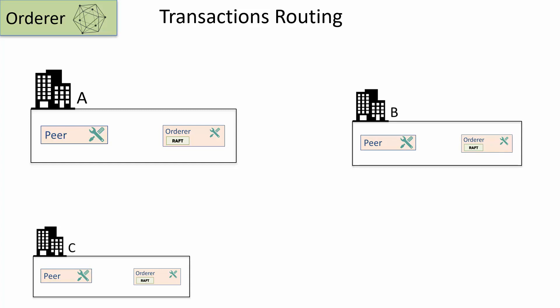When the leader will be elected in this raft network, the followers will be informed about who the leader is. In this particular scenario, orderer instance in organization B is acting as the leader.